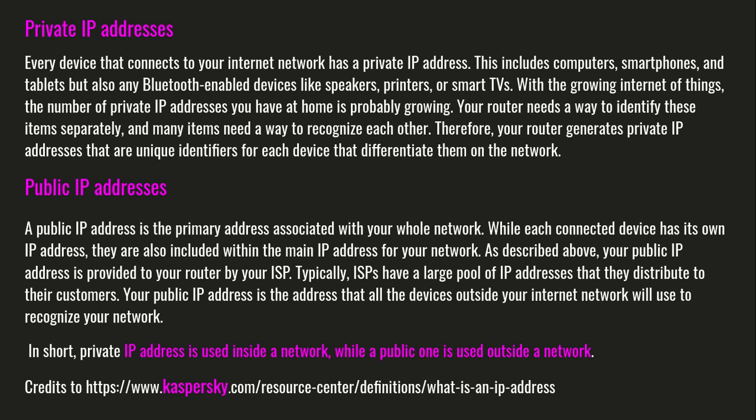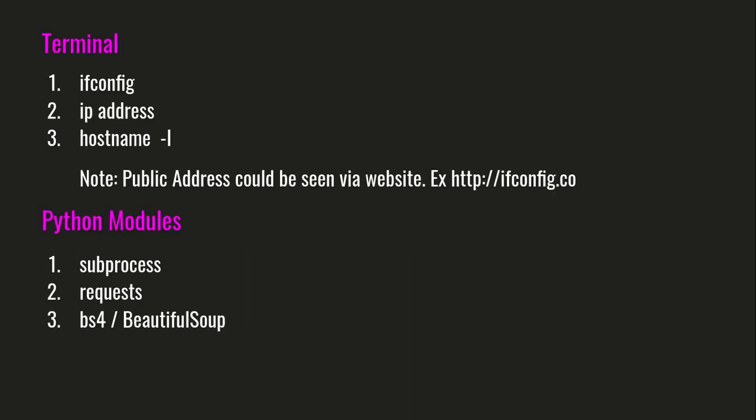In this video we are going to see how to find the private IP address and the public IP address. In the terminal, we are going to see ifconfig, IP address, and hostname — these are the commands we are going to use to understand the private address. For the public address, which is given by the ISP, we can see it directly using some websites, for example ifconfig.co. Even if you type in Google or any browser 'what is my IP address', it will show the public IP address.